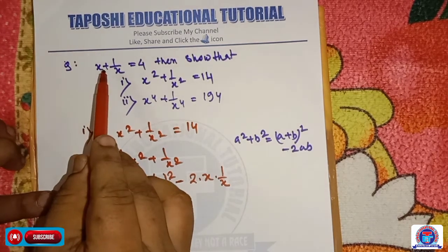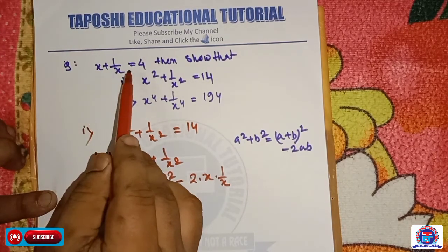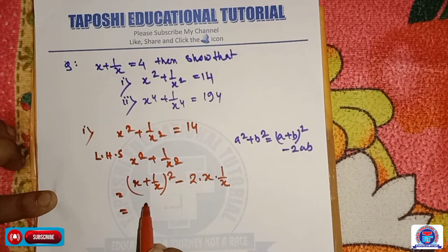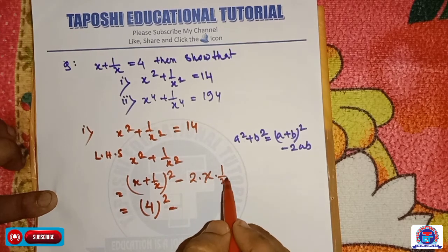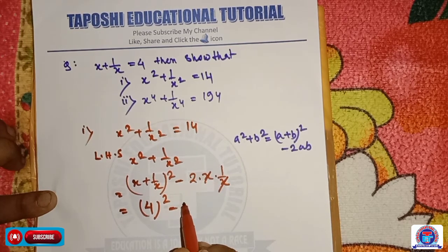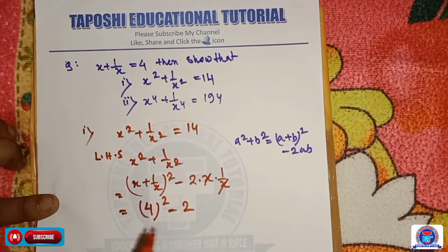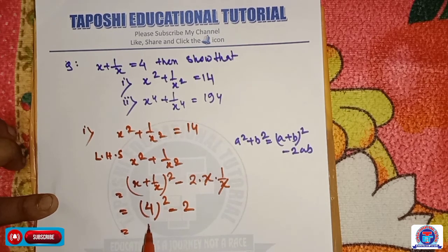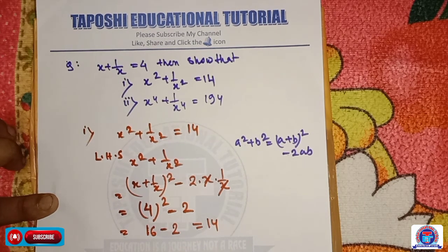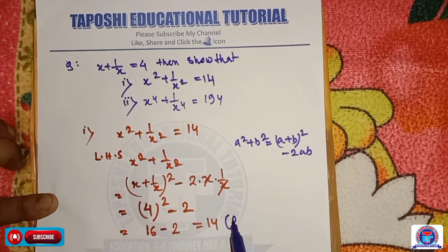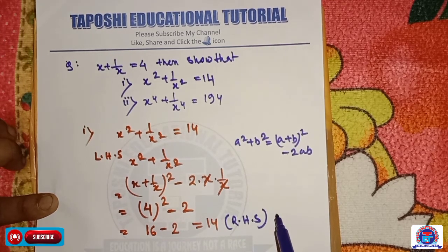It is already given that x plus 1 by x is equal to 4. We put this value: 4 its whole square minus 2 — the x cancels — so it becomes 16 minus 2, that means 14. So it equals the right hand side. Proved.